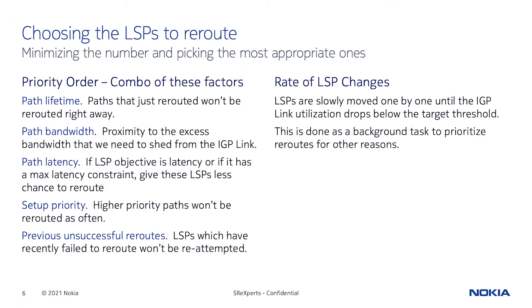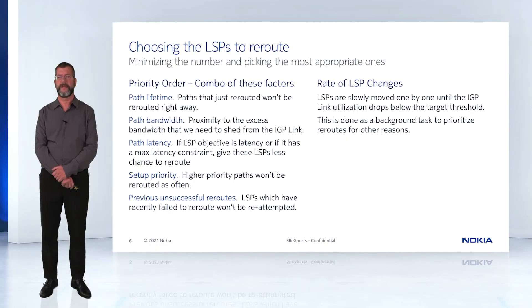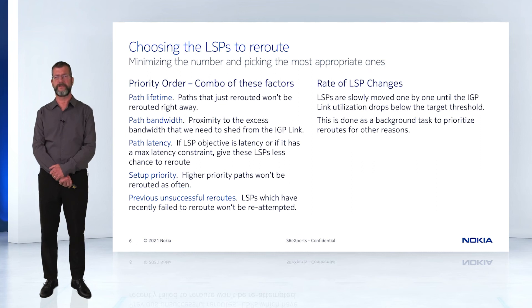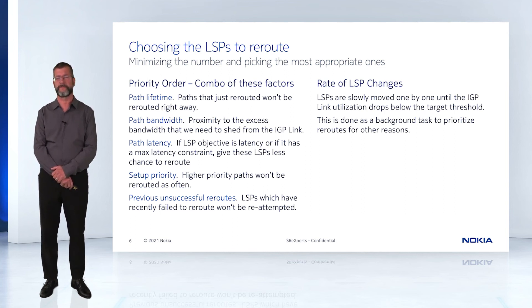Path Latency: if the LSP has an objective of latency, or it has a max latency constraint, they will be less likely to be chosen to move, as there may be few paths through the network that will keep the latency low enough. It is better to use separate LSPs using latency-based optimization for these LSPs instead of utilization-based optimization. Setup Priority: high priority paths won't be rerouted as often. Previously unsuccessful reroutes: LSPs which have recently failed to reroute won't be rerouted soon.